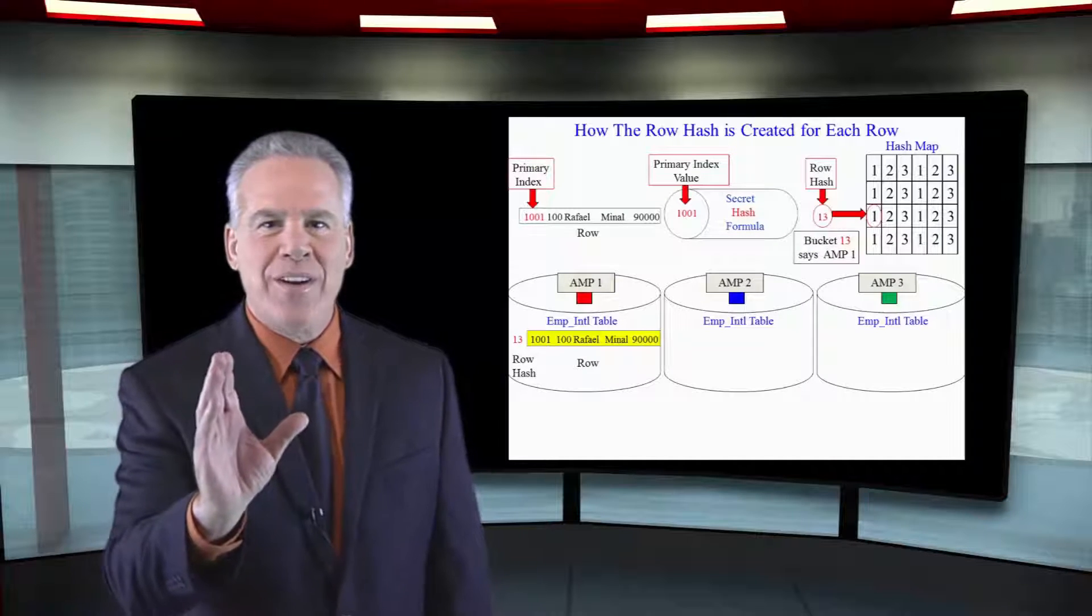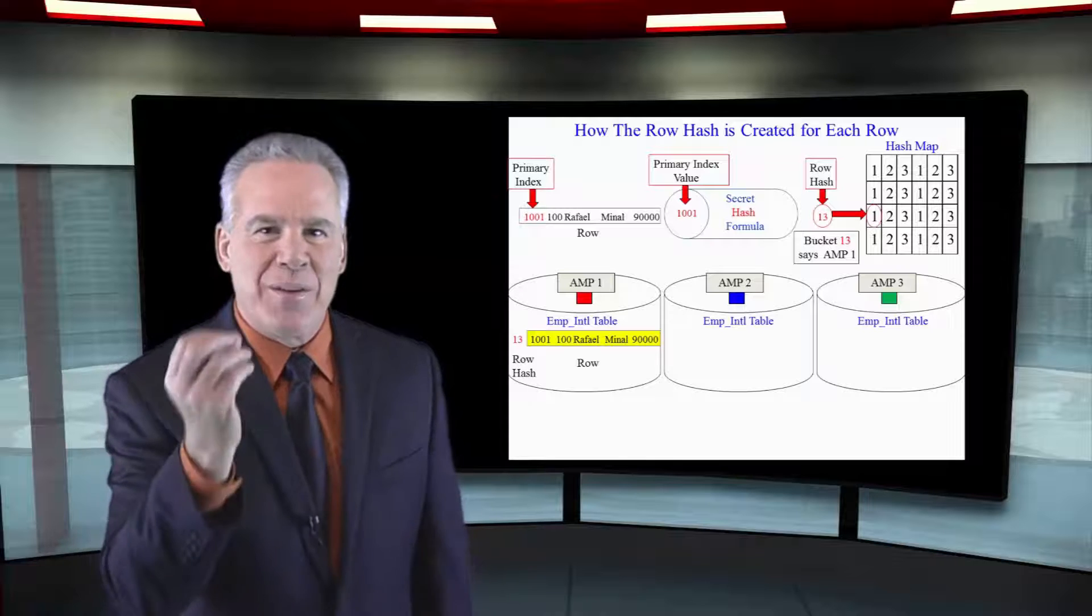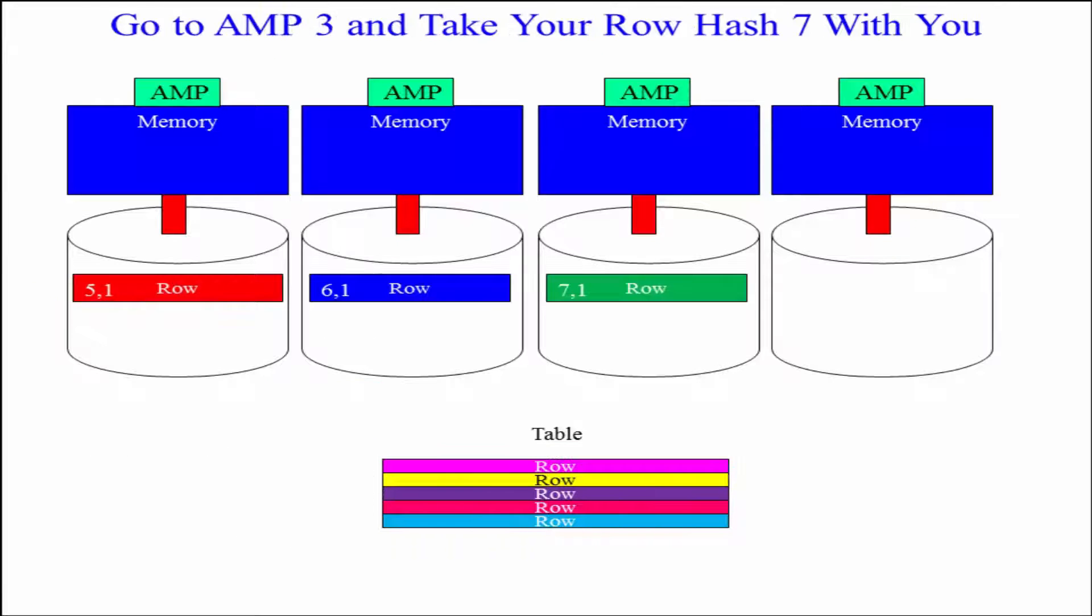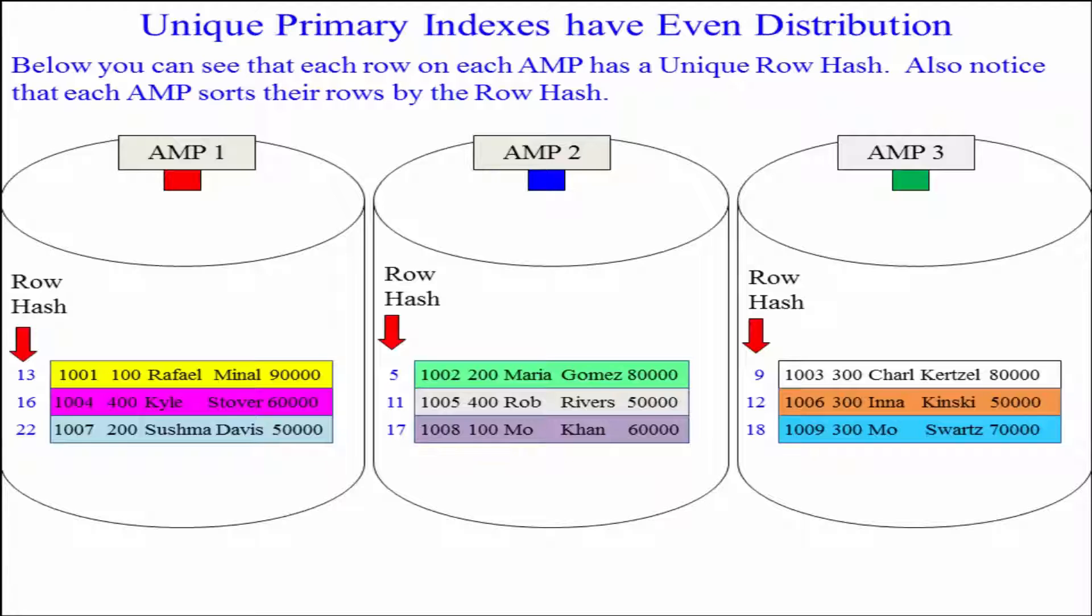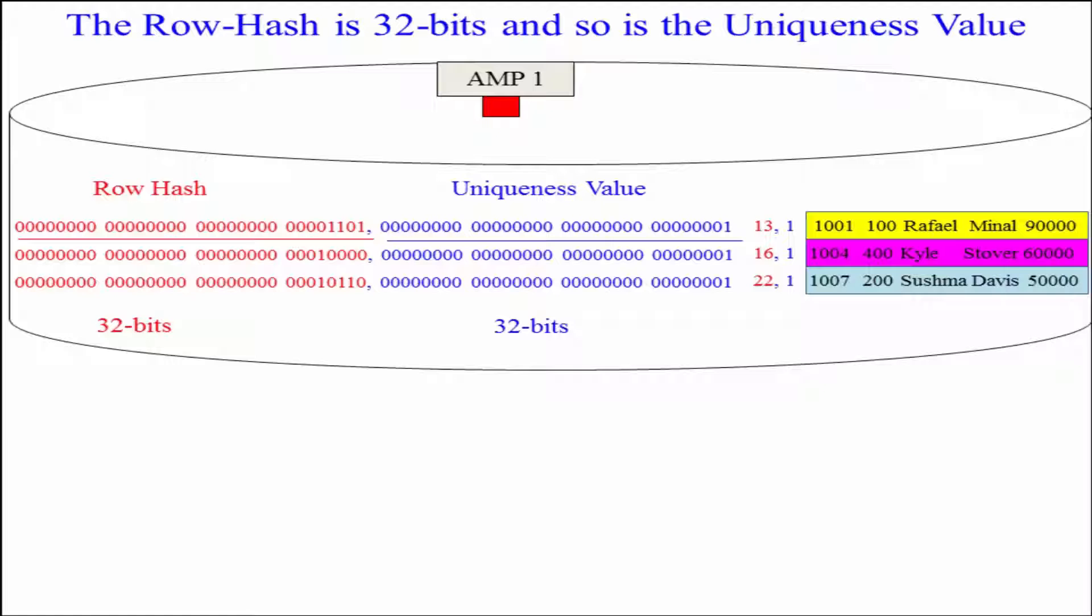Every row on every amp has been hashed by the primary index value. And in the end, it's delivered a row ID. There are eight bytes minimum in front of every row. The row hash, four bytes or 32 bits. The uniqueness value, four bytes or 32 bits. That is in front of every row as you can see here.